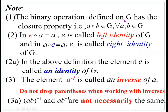Note: the binary operation defined on G has the closure property — A circle B belongs to G for all A, B in G. Whenever there is a binary operation, the set is closed. In E circle A equals A, E is called the left identity because E is to the left of A. In A circle E equals A, E is called the right identity. The element E is called the identity of G, and A-inverse is called the inverse of A.